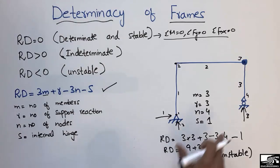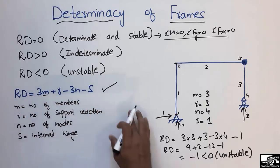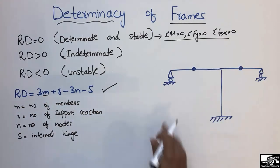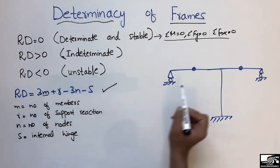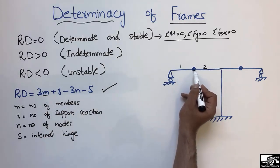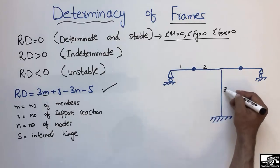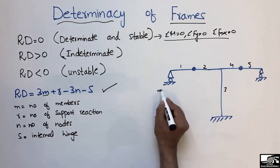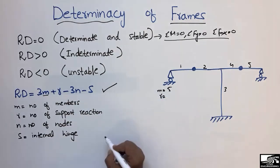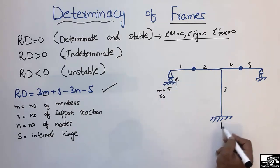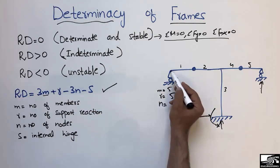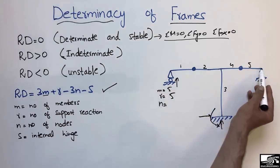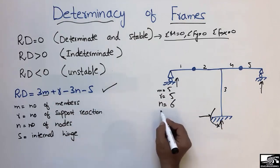Now let's consider the second example. The number of members: note that the internal hinge separates a member into two parts — counting one, two, three, four, five — so m equals five. The support reactions: a roller gives one, a fixed support gives two plus a moment reaction making three, and another roller gives one — so r equals five. The number of nodes: one, two, three, four, five, six — so n equals six. The number of internal hinges s equals two.